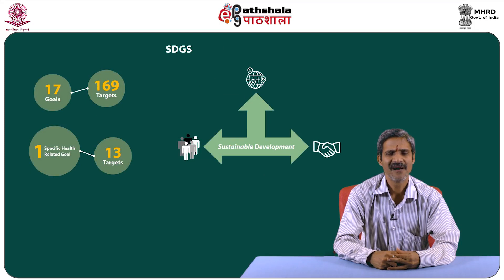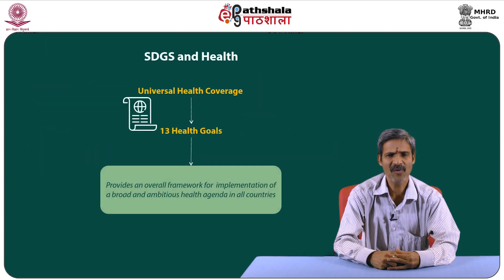The SDGs on the other hand have 17 goals and 169 targets including one specific goal for health with 13 targets. This new sustainable development agenda integrates the three dimensions of sustainable development around people, planet, prosperity, peace and partnership. The health goal of the SDGs is much broader — it says: ensure healthy lives and promote well-being for all at all ages. Health has a central place as a major contributor to and a beneficiary of sustainable development policies.